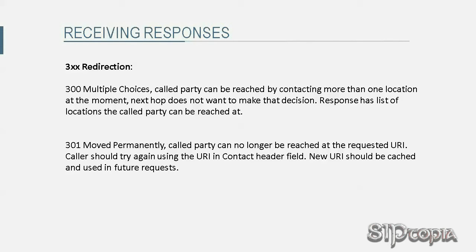300 Multiple Choices indicates that the called party can be reached by contacting more than one location at the moment, and the next hop doesn't want to make that decision on behalf of the caller. The caller receives a 300 Multiple Choices response with a list of locations. For example, if Tarzan called Jane and she is reachable at camp 1 and camp 2, Jane's SIP proxy could respond with 300 Multiple Choices instead of making a routing decision, indicating to Tarzan that he needs to send a new request using one of the two URIs in the response contact header field.